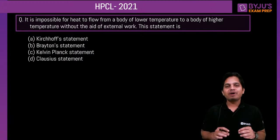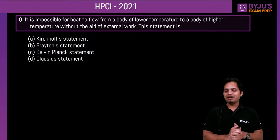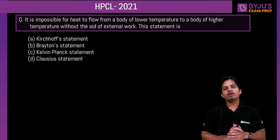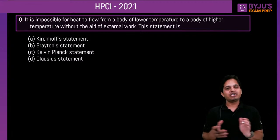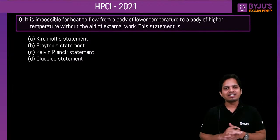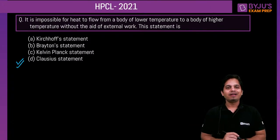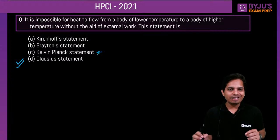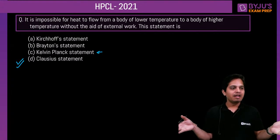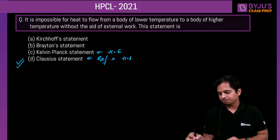Next question: 'It is impossible for heat to flow from a body of lower temperature to a body of higher temperature without the aid of external work.' This statement is Clausius statement. Kelvin-Planck's statement says it is impossible for a thermodynamic cycle to produce work continuously while exchanging heat from a single reservoir — giving the heat engine basis. Clausius statement gives the refrigerator and heat pump basis.